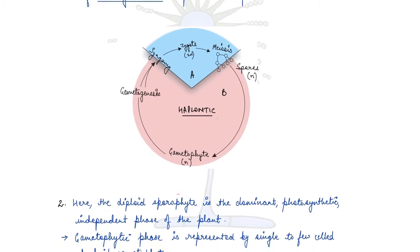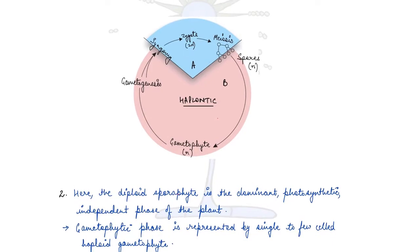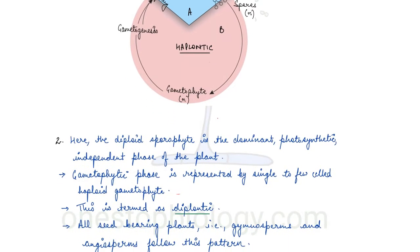In the diagram, you can see that the sporophytic or diplontic phase is very small, but the haplontic phase — where the gametophyte is formed and gametogenesis occurs after spores are released — is the dominant one in the cycle.